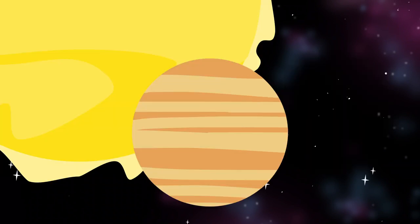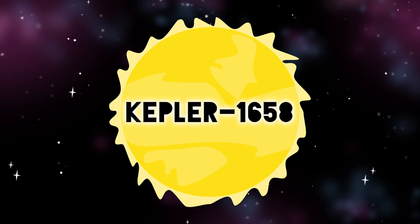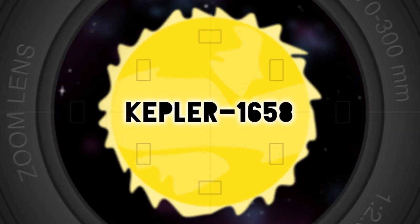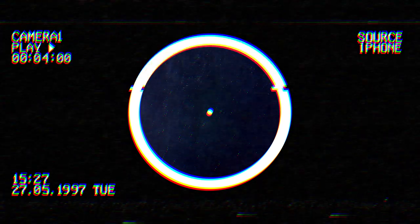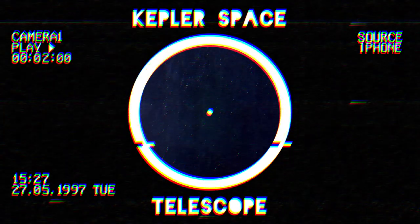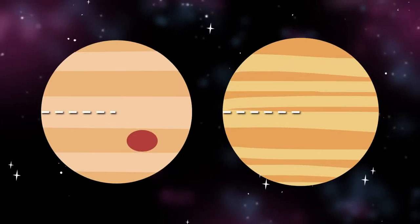I orbit an F-type star named Kepler-1658, or KOI-4—I know it's bizarre. I may be the first exoplanet detected by NASA's Kepler telescope after its launch in 2009. My radius is 1.07 times that of Jupiter's.